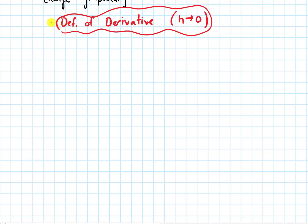In this video we will talk about the definition of a derivative. There are two forms of the definition of a derivative that we'll see. In this first one we're going to be taking a limit as h goes to 0. I want to motivate this with a picture.